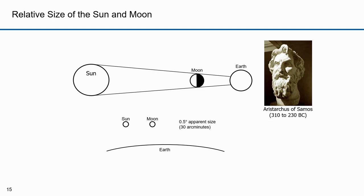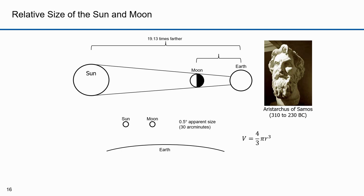Aristarchus knew that the sizes of the sun and the moon must be in proportion to their distances from the earth. If the sun was farther away, it had to be larger than the moon. If the sizes were proportional, then the diameters and volumes would be proportional. The sun is 19.13 times farther away, meaning the proportion of the diameters was also 19.13 to 1. Using the formula V = (4/3)πr³ and substituting 19.13 for r, the volume of the sun is 28,324 times larger than the moon.